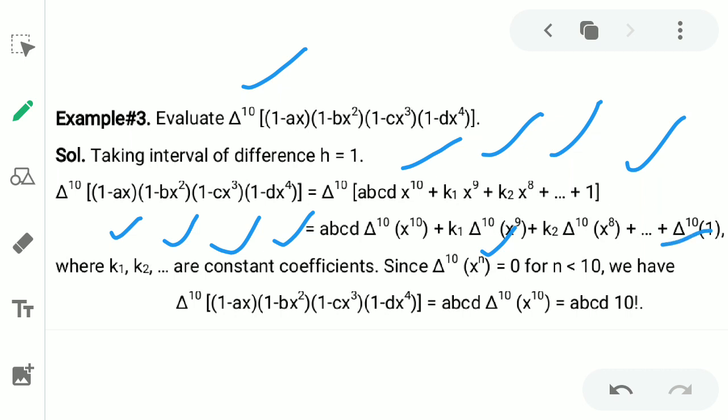Now we know that if del raise to power 10 and x ki power 10, agar ye same degree hota hai. So that means yeh 10 factorial hota hai aur rest of the term mein yeh 0 ho jae ga. So that means your answer will be a, b, c, d into 10 factorial which is the direct result.